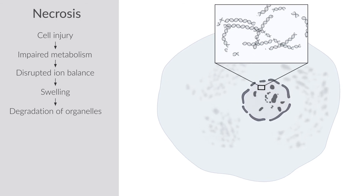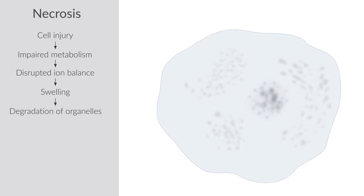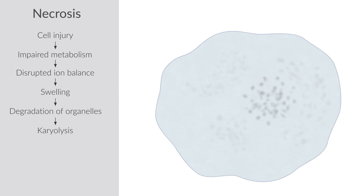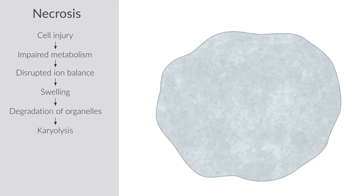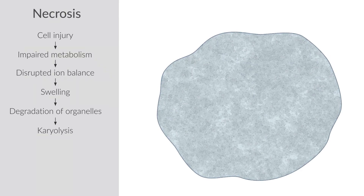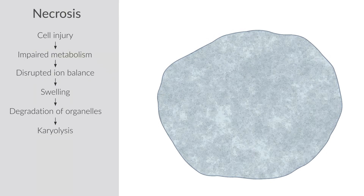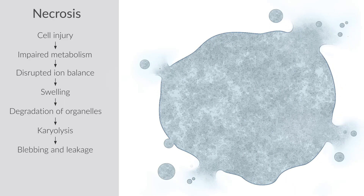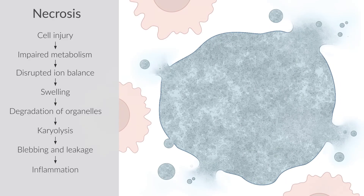The nucleus shrinks and eventually dissolves, a process known as karyolysis. The cell eventually loses its integrity with membrane blebbing and leakage of cell content. This leakage often elicits inflammation and calls for the action of bystander immune cells.